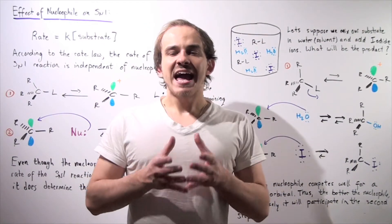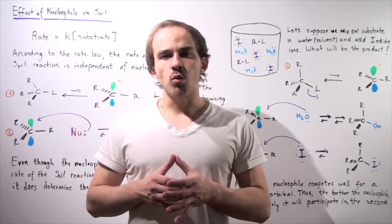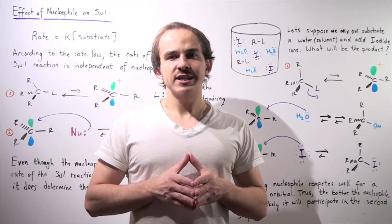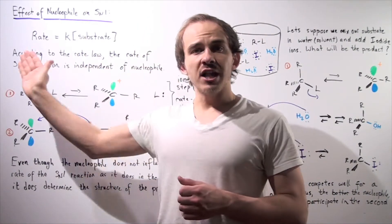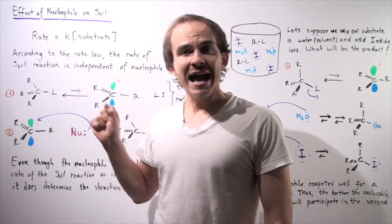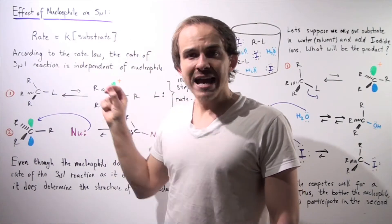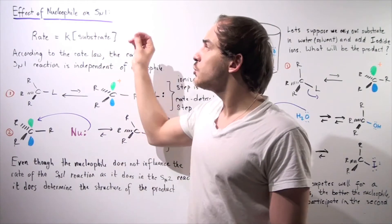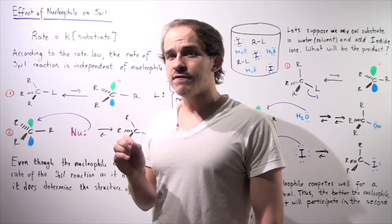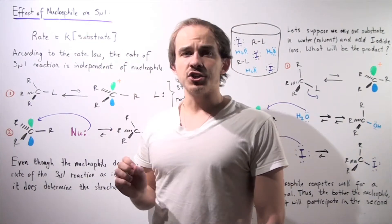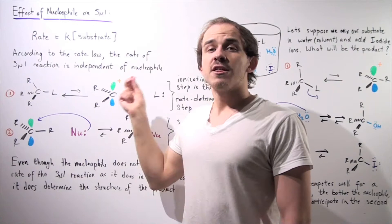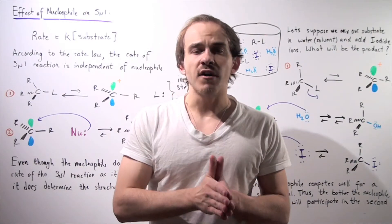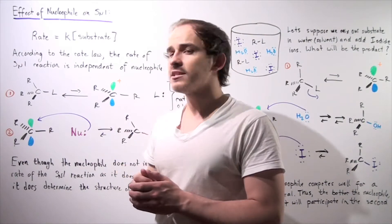In this lecture, we're going to examine how the nucleophile affects our SN1 reaction. Let's begin by recalling what the rate law of our SN1 reaction is. The rate law is given by the following equation: the rate of our forward reaction is equal to the rate constant K multiplied by the concentration of our substrate. Notice that the concentration of the nucleophile does not take part in this equation, meaning the rate of the SN1 reaction is independent of the nucleophile.